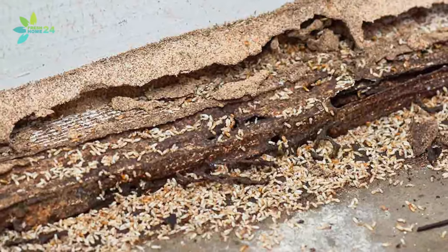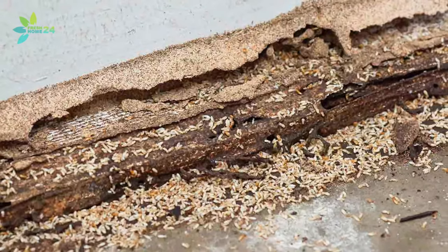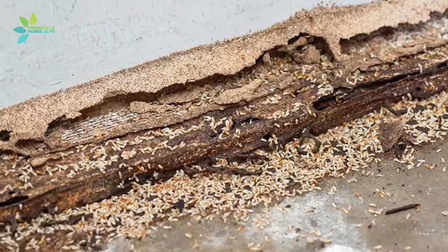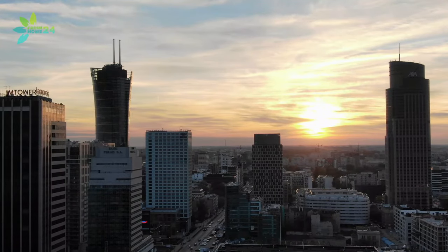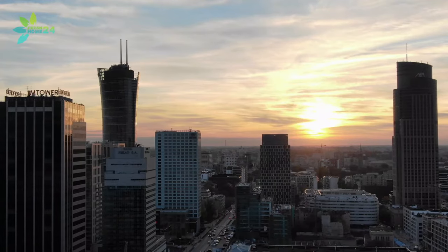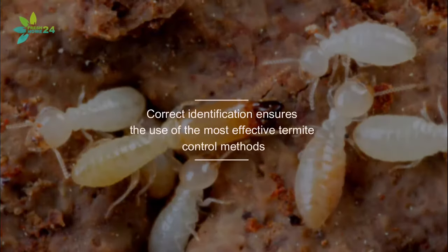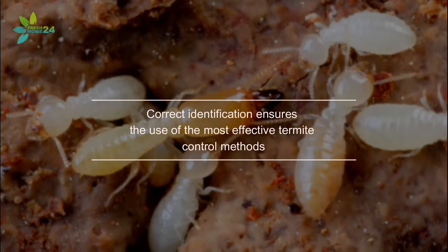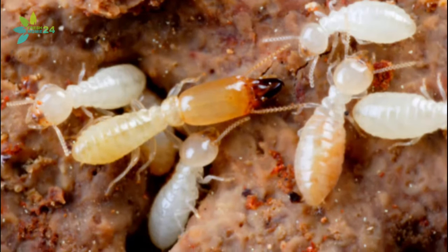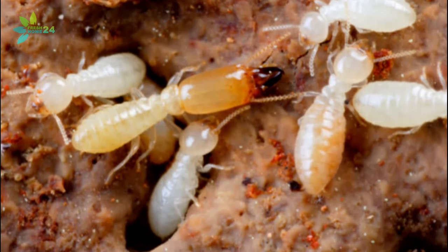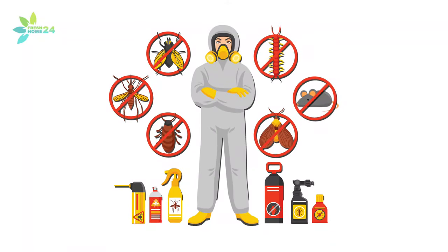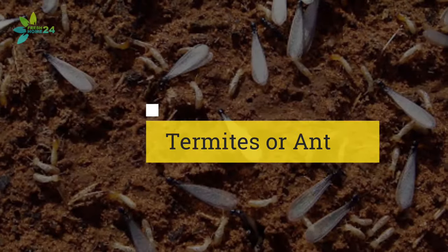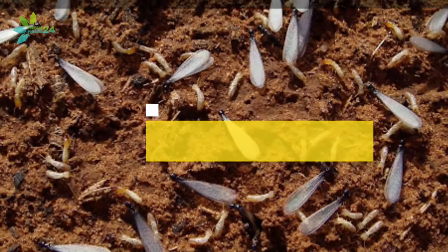There are different types of termites, but some very destructive species like warm, moist areas, so cities such as Los Angeles, Phoenix, Tucson, Seattle, and San Francisco can be affected. Correct identification ensures the use of the most effective termite control methods and allows you to choose the most appropriate prevention steps. You can discuss termite treatment options such as chemical barriers, fumigation, or other methods to keep termites away.